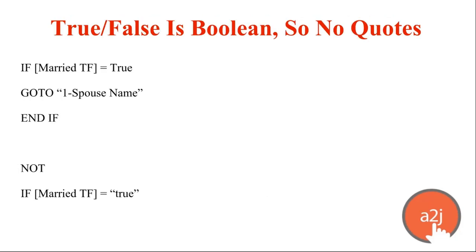True and false: in A-to-J 4 you had to put them in quotes. Now they're Boolean, so you don't put them in quotes when using them in logic or variable fields — just write true or false by themselves, no quotes. You can use any capitalization: lowercase, uppercase, all caps, mixed — anything. In HTML, if it's in quotes it's treated as a string, which is not what you want for true/false variables.